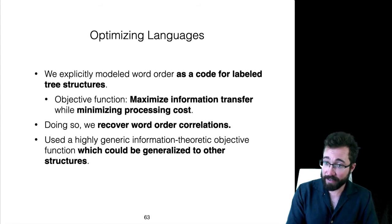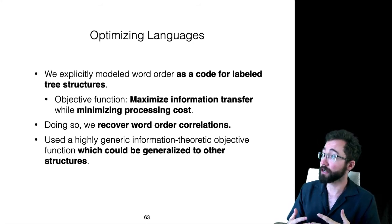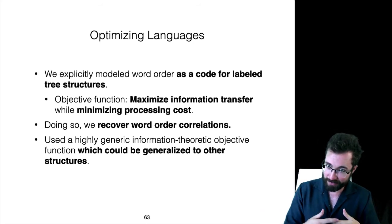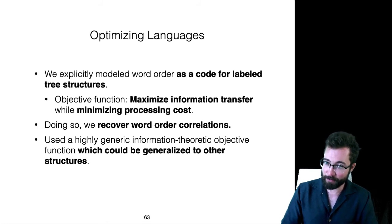In general, this is a highly generic information theoretic objective, which could be generalized to other structures. You could imagine, for example, trying to figure out what morphology you should add to words in order to optimize this kind of objective.